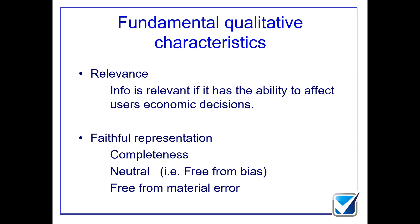From a faithful representation perspective, we're looking at whether the information produced is absolutely complete. This ties in with the ACCURATE mnemonic from your MA1 and MA2 studies. You need information to be totally complete, free from bias — meaning the person putting the information together is not attempting to impose their own message over the real information. That neutrality, or freedom from bias, is also called objectivity, which is critical and ties into the ethical modules.